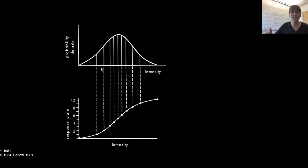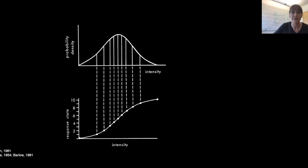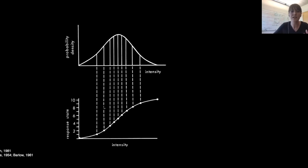A consequence of efficient coding is that if the stimulus distribution were to change in time, we would expect the tuning properties of these neurons to also change in time to keep up with the environment. In this way, efficient coding gives us a normative perspective on sensory adaptation, which we can think of as the process of dynamically reallocating limited resources to keep up with changes in the outside world.